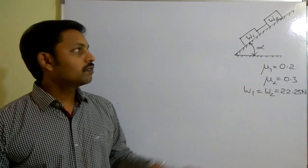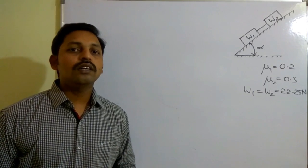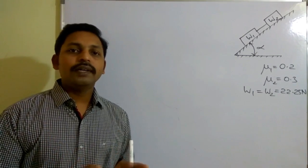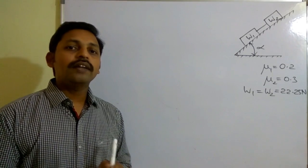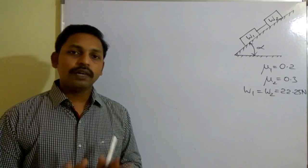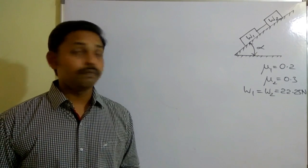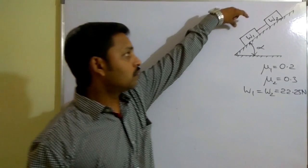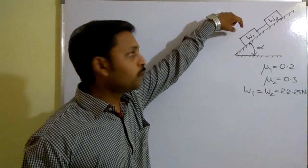Whatever may be the problem, the procedure in friction problems is: first you need to draw a free body diagram for each and every block, then you need to apply equations of equilibrium, and finally you solve those equations to get the solution. First, observe these two blocks — which block will have the tendency to move first? It's W1.